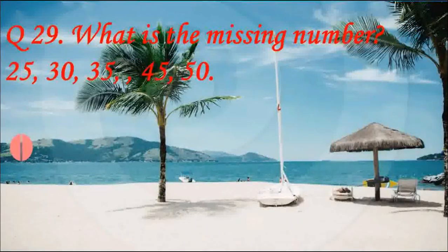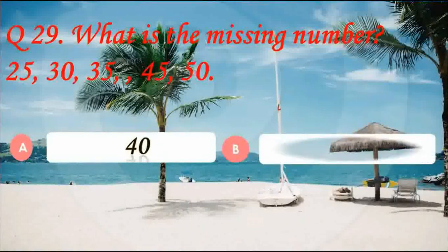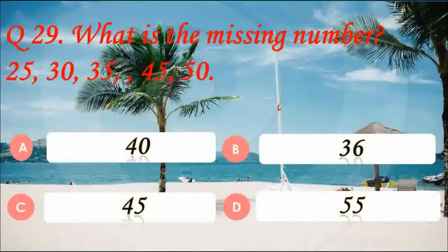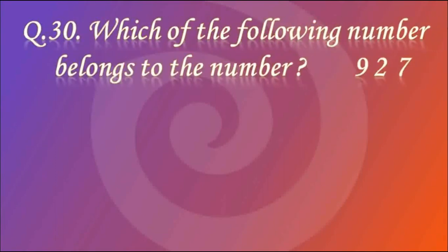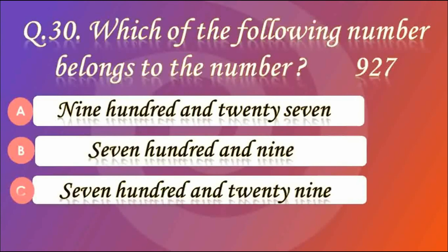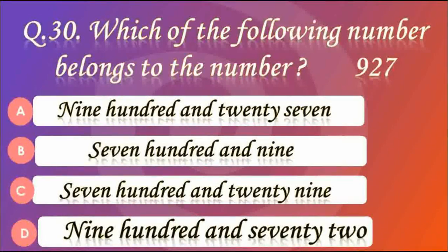Question number 29. What is the missing number? The sequence is 25, 30, 35, __, 45, 50. Answer A — 40. It is a very easy question. Question number 30. Which of the following numbers belongs to the number 927? Answer A — 927. Option A is correct.